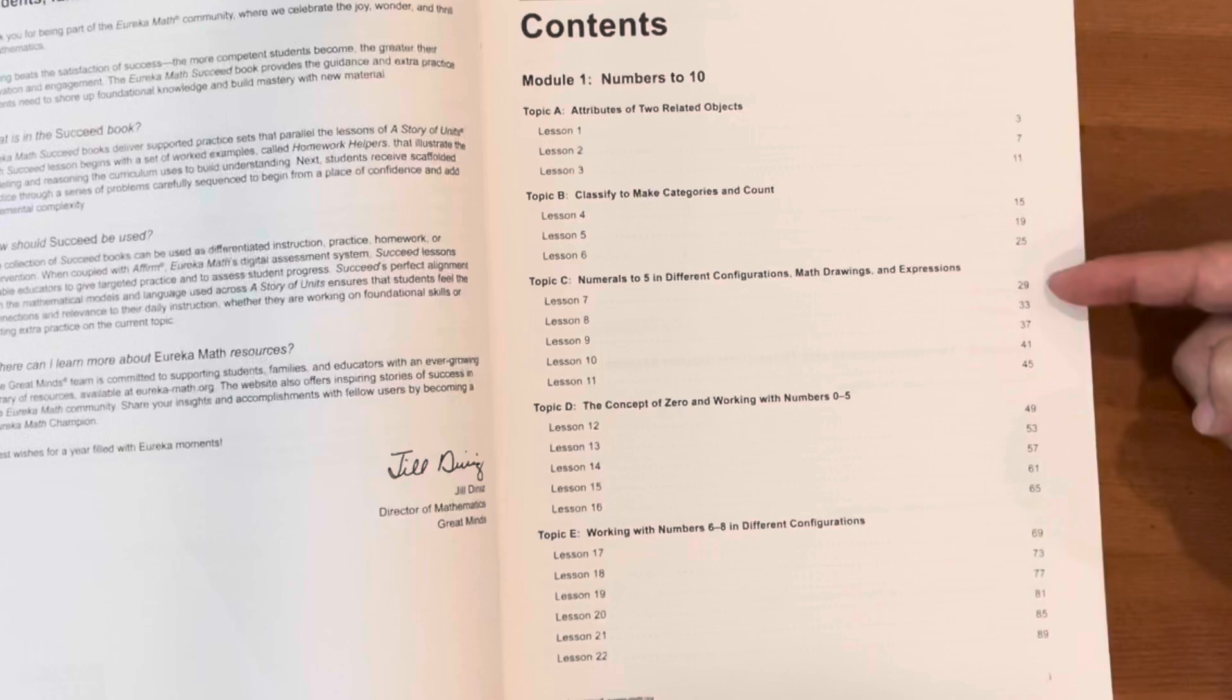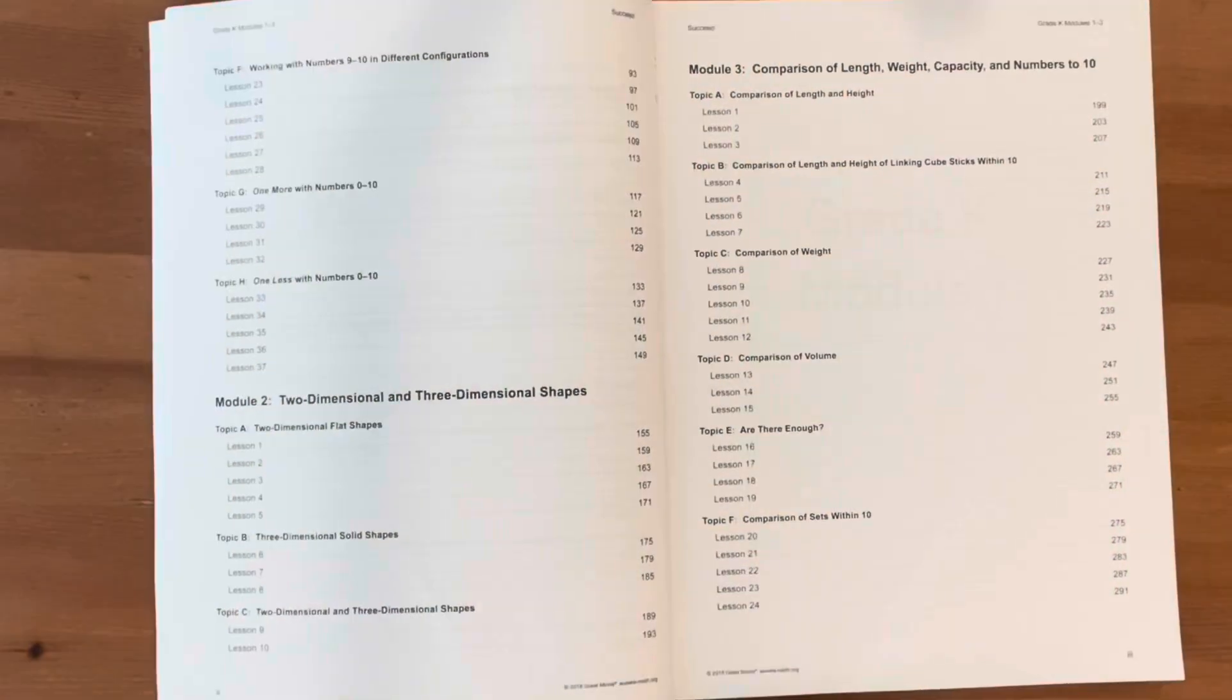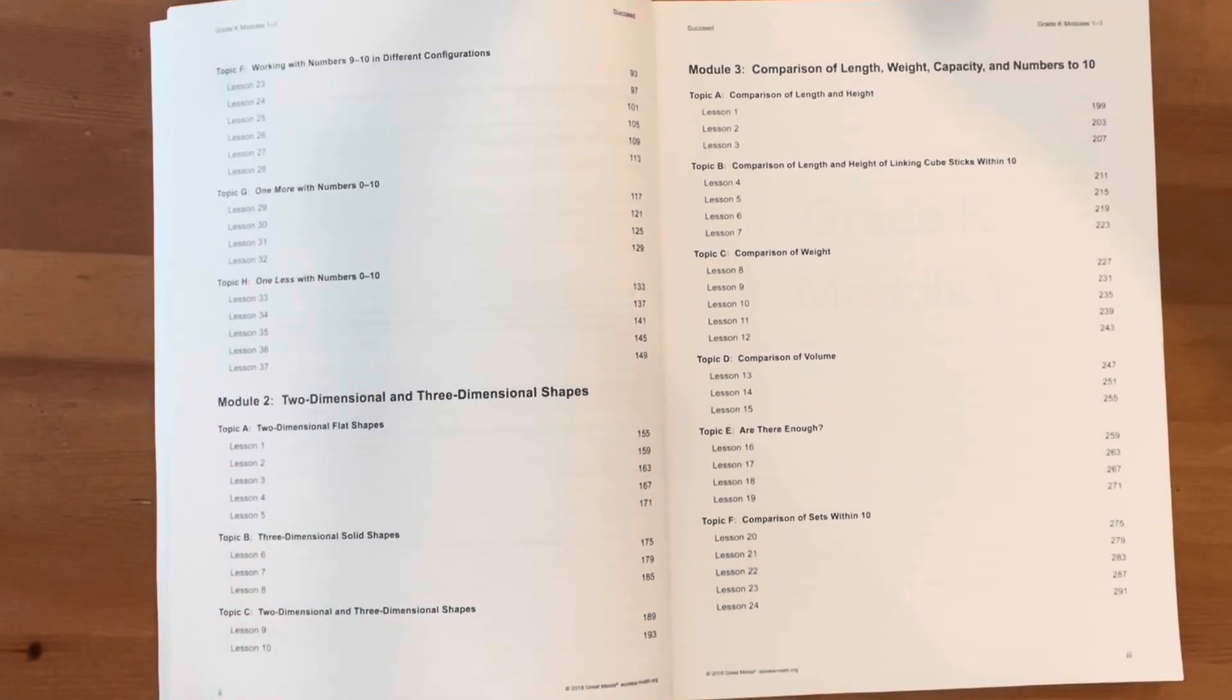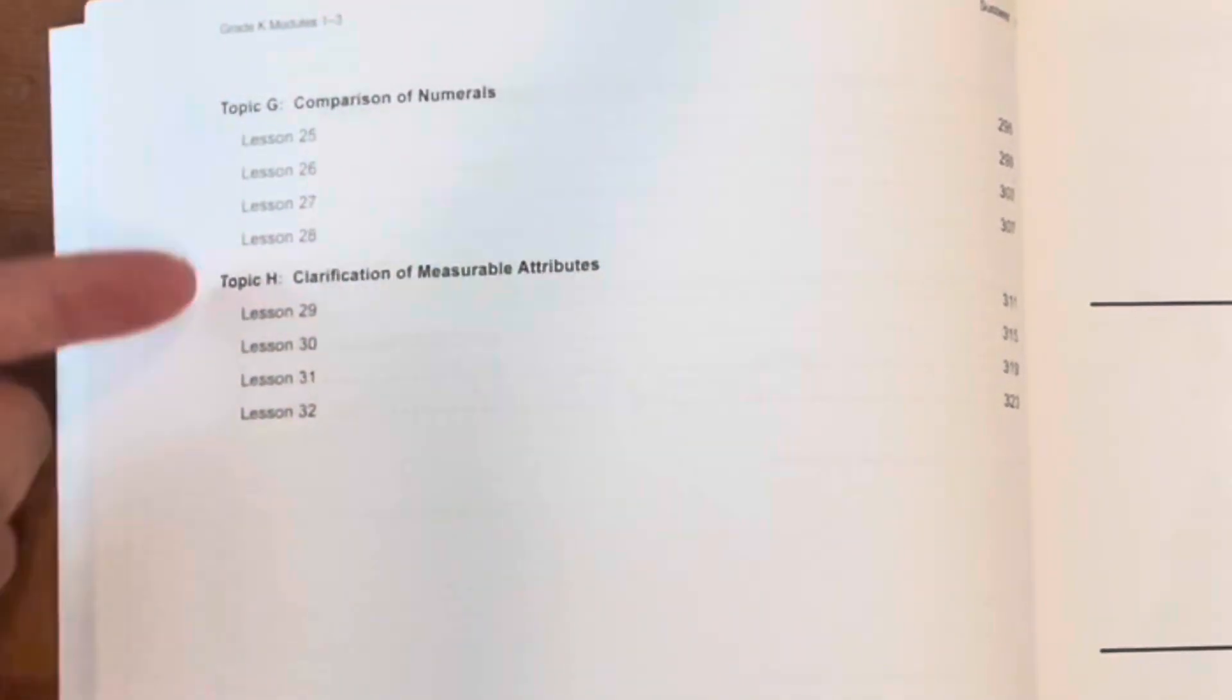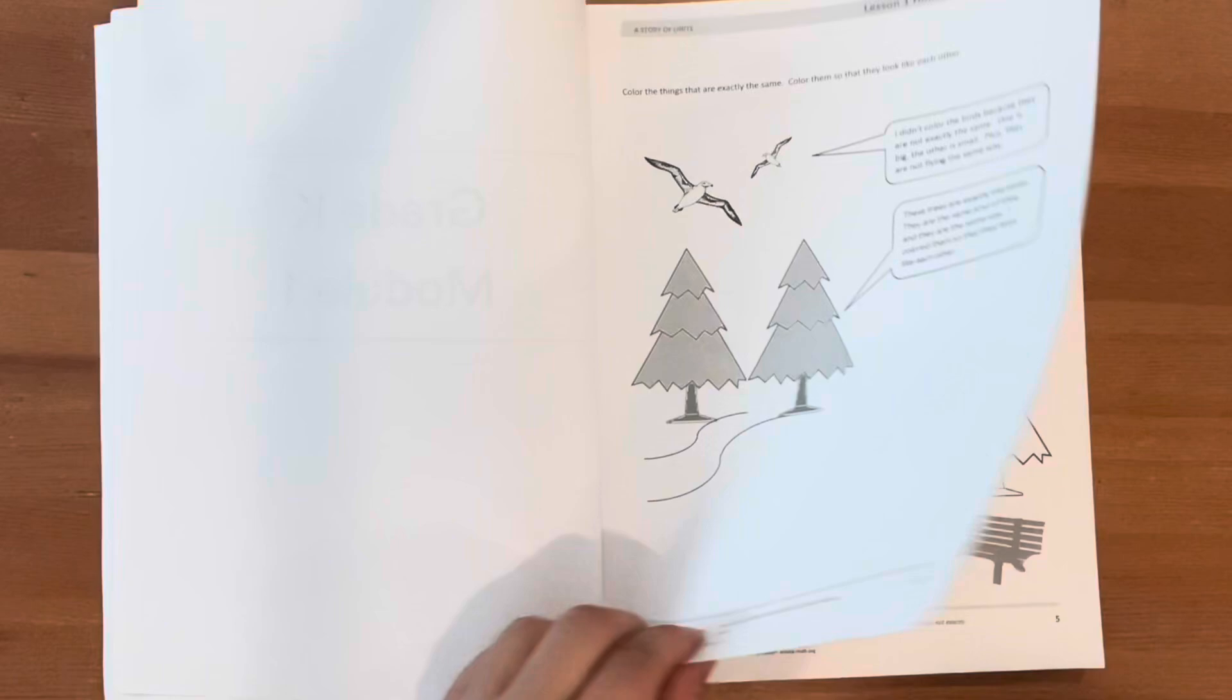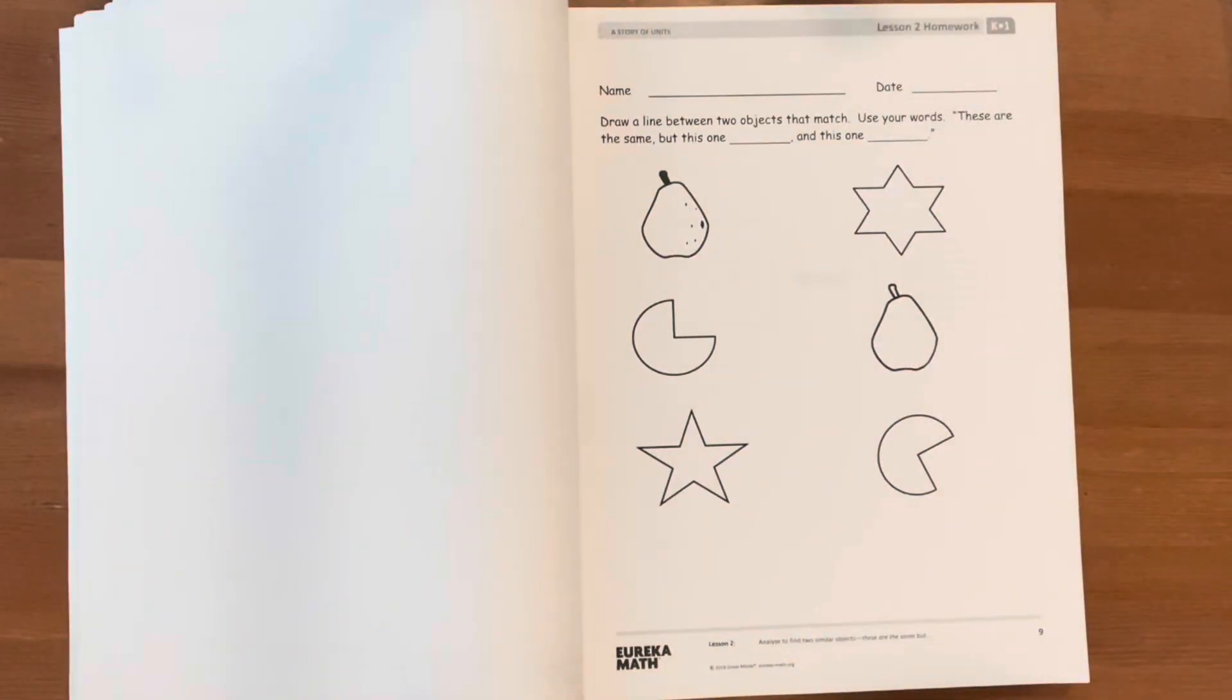This workbook has three sections or modules, 79 lessons, and a total of 327 pages. Module 1 is all about numbers to 10, Module 2 is two-dimensional and three-dimensional shapes, and Module 3 is about the comparison of length, weight, capacity, and numbers to 3 and numbers to 10.